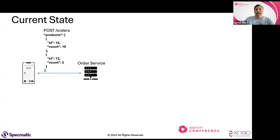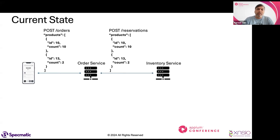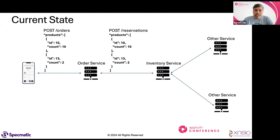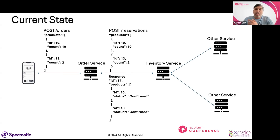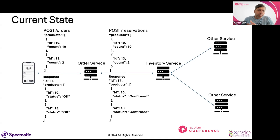Let's look at the current state of the application. My app makes a request to the order service — it's doing a POST on slash orders. I've selected two order items: order ID 10 and order ID 13 with the quantity needed. This reserves inventory on the inventory service, which may internally talk to other services. The inventory service comes back with a status for each product and its own reservation ID. The order service does a transformation and sends back order ID 7 with the product ID and status. Status is important because of things like short picking — you may have asked for 10 products but only some may be available.